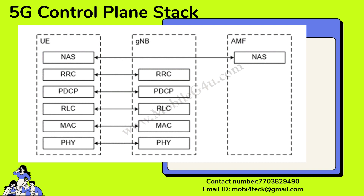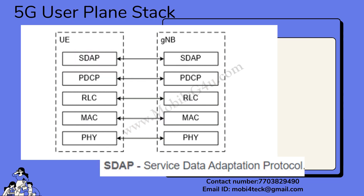Next we'll discuss the user plane protocol stack. All the lower layers come under the user plane — Physical, MAC, RLC, and PDCP are present. There is no RRC or NAS layer in the user plane stack. The user plane is used whenever you want to send data. There is a change in the 5G user plane protocol stack — a new layer is introduced in 5G.